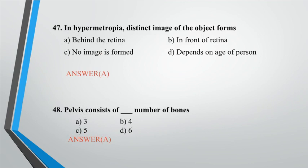Question 47: In hypermetropia, distinct image of the object forms — A. Behind the retina, B. In front of retina, C. No image is formed, D. Depends on age of person. Answer: A.